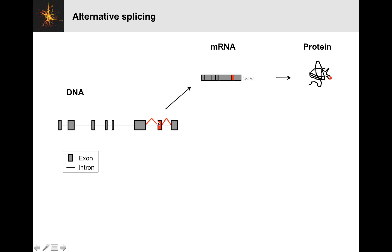The phenomenon of alternative splicing is when you have one of these exons that is sometimes present in the mRNA and is sometimes not present. We'd say this exon is alternatively spliced. If this region is part of the region that's translated, there'll be a little chunk of protein, shown here in red, that is present in one form and not present in the other form — identical except that this little piece of protein is missing.